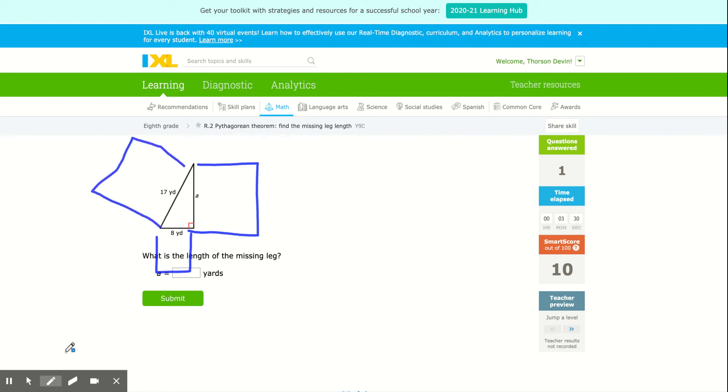We're going to grab our calculator, since I'm not sure what 17 times 17 is. That 17 times 17 is going to be 289. So the area of this bigger square is 289.